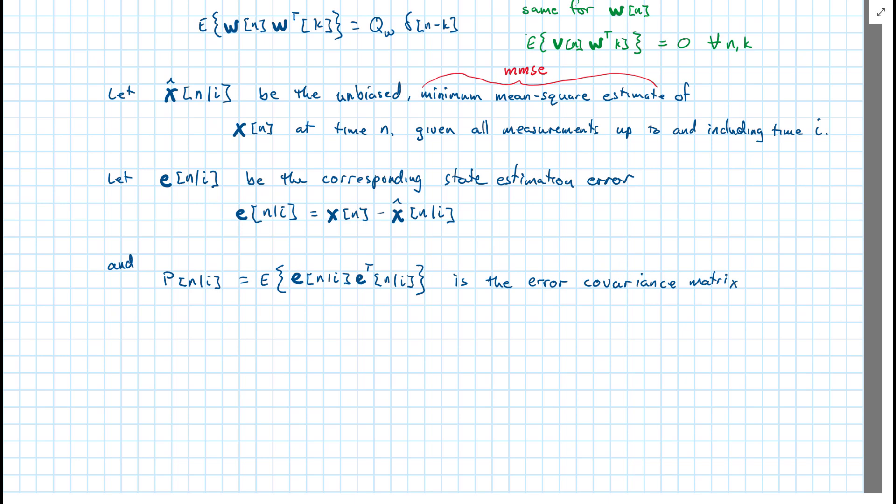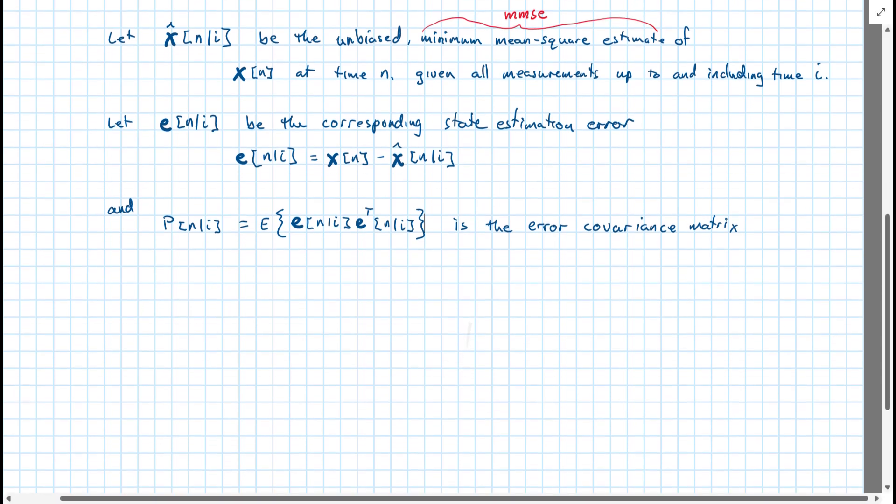It's covariance because we aren't looking at the expected value of e at different points in time, but rather the e vector at a single point in time. And so it's the variance, the covariance of the values within the vector e. And it's a covariance matrix and not just a correlation matrix because we assume that it's zero mean. And so those two will be the same.